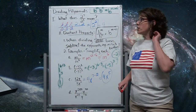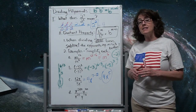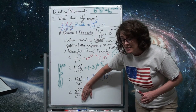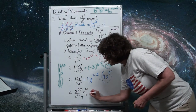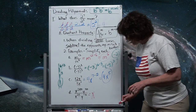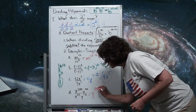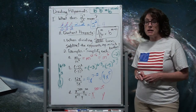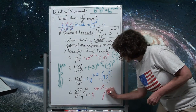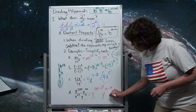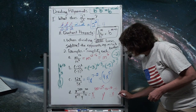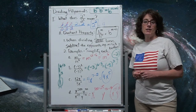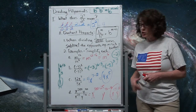One more example: x to the 200 times y to the 40, divided by x to the 25 times y to the 10. I can only subtract exponents for the same base. For the x's: keep x, subtract 200 minus 25 to get 175. For the y's: keep y, subtract 40 minus 10 to get 30. The result is x to the 175 times y to the 30. I can't simplify further since I don't know x or y.